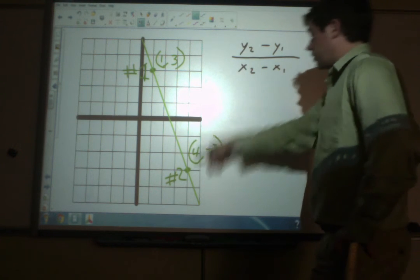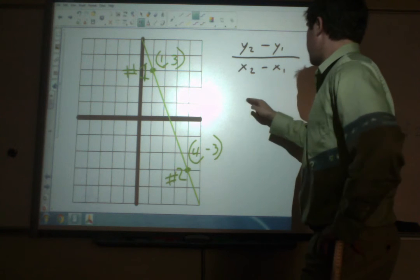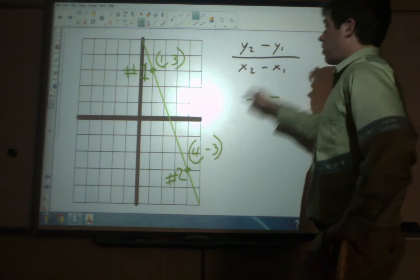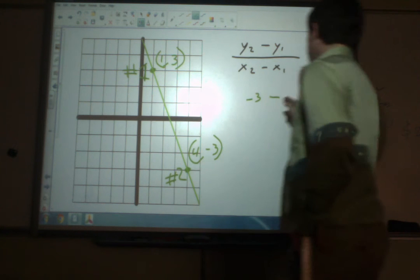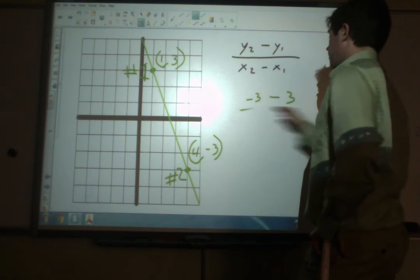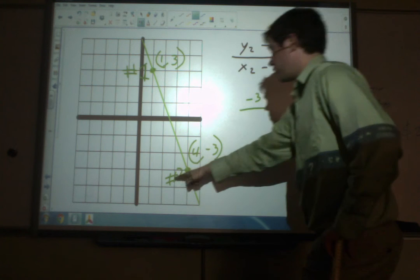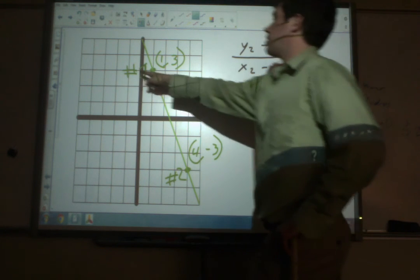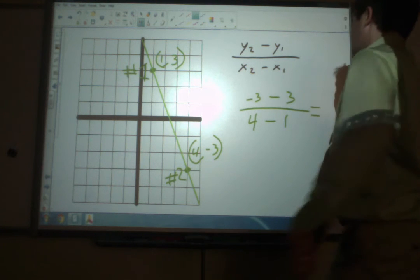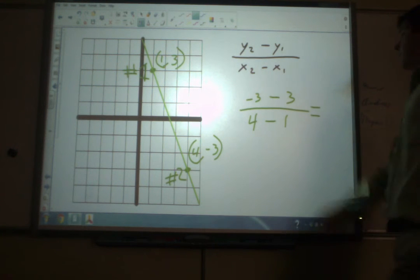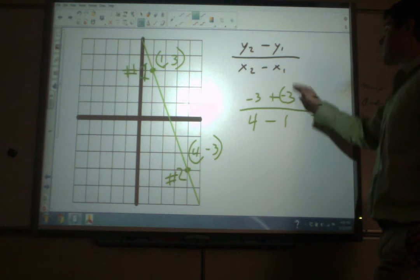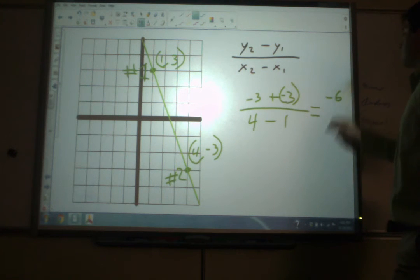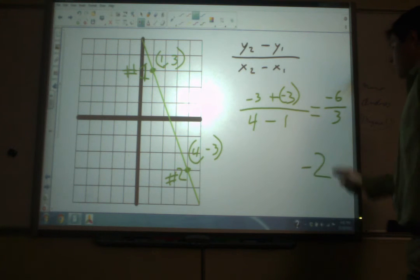Y2. Here's point 2. Here's the y. That's negative 3. Minus y1. Here's 1. Here's the y. 3. Over x2. Point 2. Here's the x. Minus x1. Here's point number 1. There's the x. Now we've just got to subtract. We're adding the opposite. So negative 3 plus negative 3 is negative 6. 4 minus 1 is 3. And negative 6 divided by 3 is negative 2.